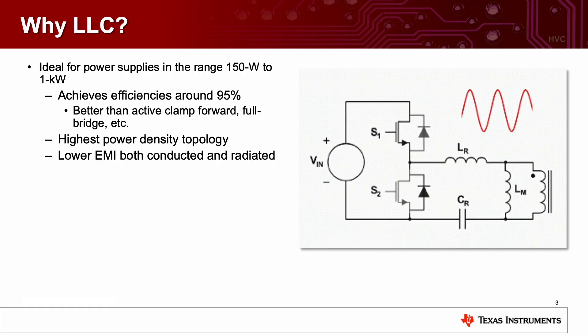So why would you want to use an LLC? LLC converters are typically used in power supplies ranging from 150 watts up to 1 kilowatt. They can achieve very high efficiencies, sometimes up to 95%, much better than active clamp forward, full bridge, etc. They have the highest power density topology you can achieve. It is lower with both conducted and radiated EMI.